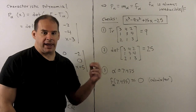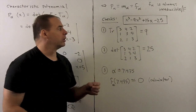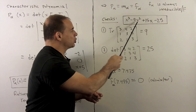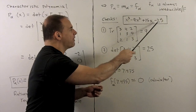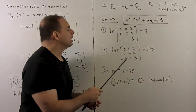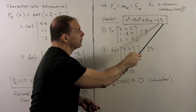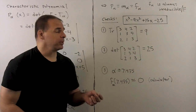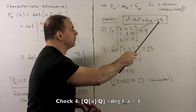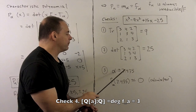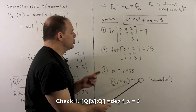What checks do we have? First, comparing the characteristic polynomial against T sub alpha, the term after the lead term is always minus the trace. Taking the trace of T sub alpha, we see 9 comes out — and that checks. We also have the last term equal to plus or minus the determinant. The sign alternates from the lead term — plus, minus, plus, minus — so this is minus the determinant. Computing the determinant using the six diagonals trick, we get 25, and that checks out. Finally, alpha is supposed to be a root: alpha is roughly 7.435, and plugging 7.435 into this polynomial gives roughly zero, confirming alpha is a root.